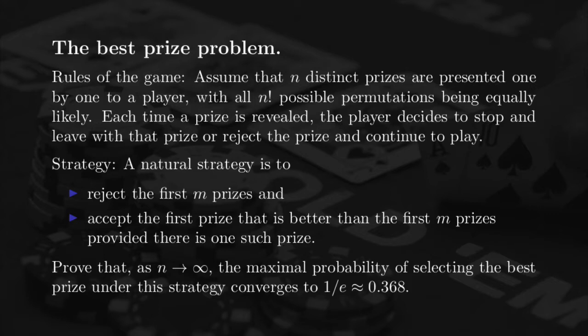I should add: provided there is one such price. Meaning that if the best price was in the first M prices that she already rejected, then she is not going to accept any of the following prices — except the last one so that she leaves with something. So in this case she would miss the best price, because the best price is not in the first M.